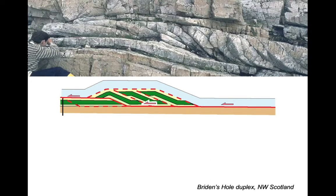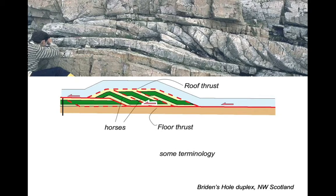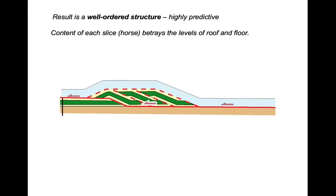And here's an example from the Moine Thrust Belt. We can see the individual components, so let's add some terminology. The upper thrust is called a roof thrust, the lower one a floor thrust, and the individual thrust slices are often referred to as horses. So there's a nice stack of horses in the photograph. The result of all this thrusting is a well-ordered, highly predictive structure.